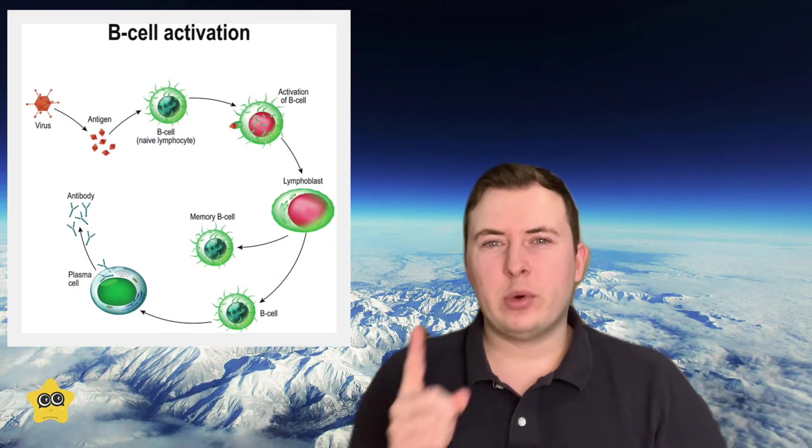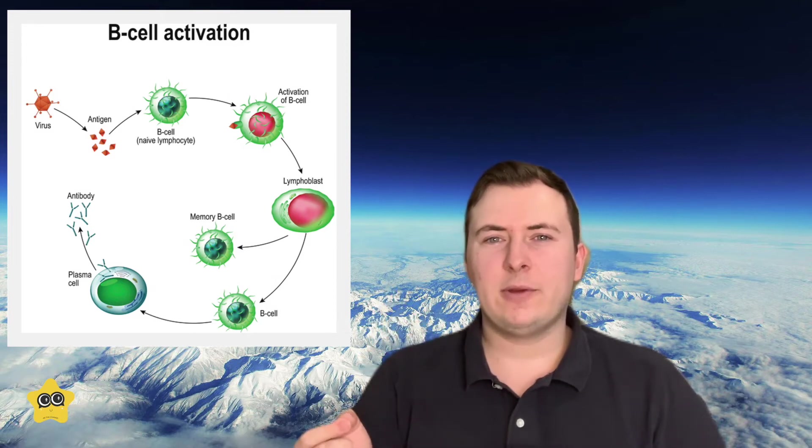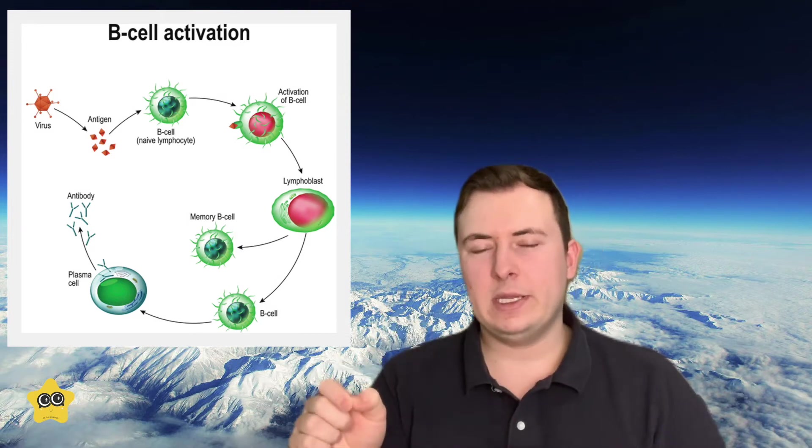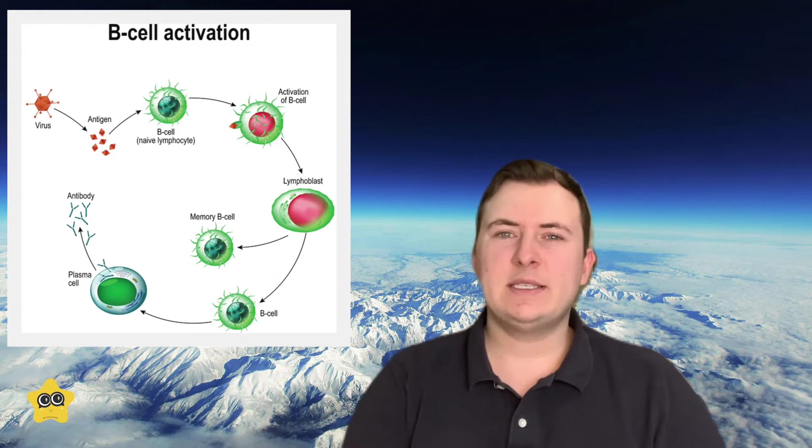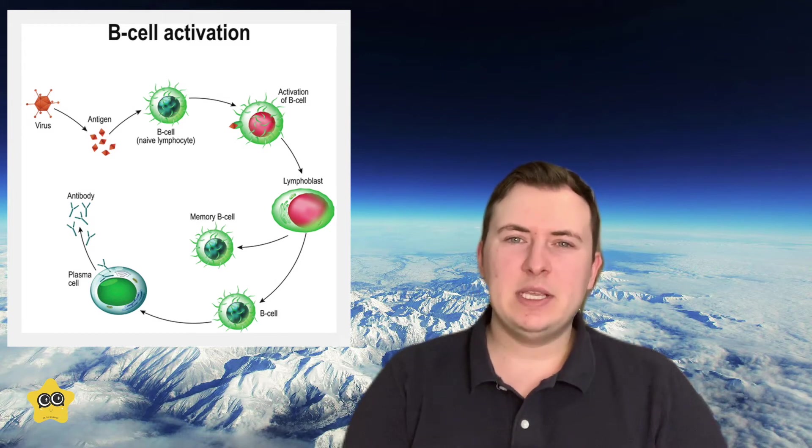B cells activate one of two ways. They either activate independently or dependently of T cells. In T cell dependent activation, B cells encounter a helper T cell, which sends them a message to activate, and they activate.